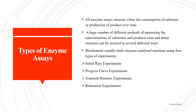Types of enzyme assays. All enzyme assays measure either the consumption of substrate or production of product over time. A large number of different methods of measuring the concentration of substrate and product exist, and many enzymes can be assayed in several different ways. Biochemists usually study enzyme-catalyzed reactions using four types of experiments.